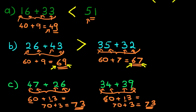Now have a look at this. We've got 73 over here. And we've got 73 over here. They're both exactly the same. Therefore, we place the equals sign. So this now reads 47 plus 26 equals, or is the same as, 34 plus 39.